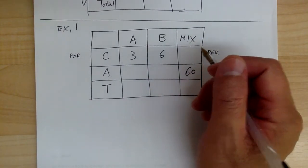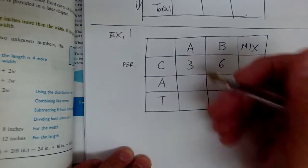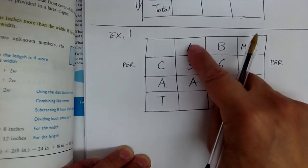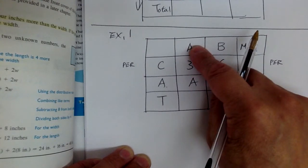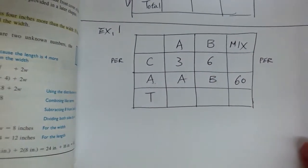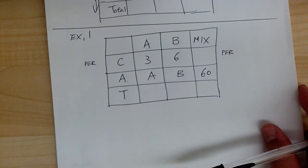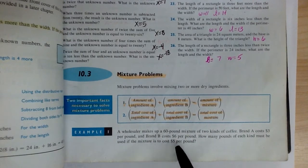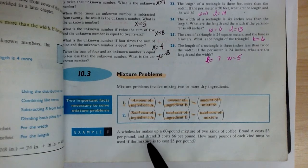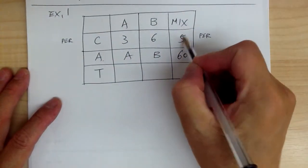The problem asks how many pounds of each kind, so you don't know those amounts. When you don't know, use variables — use A for brand A and B for brand B. Continuing: the mixture costs $5 per pound. So $5 goes in the cost row for the mix. One thing to notice: the middle number always goes in the mix. The higher and lower numbers go on the sides; the middle number always goes to the mix — no exception.